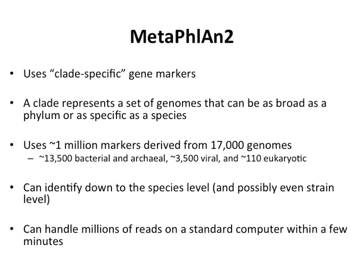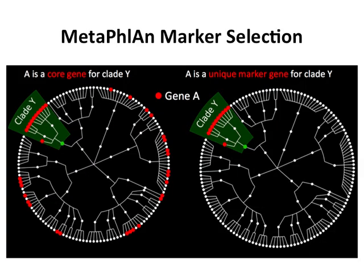MetaPhlAn2 uses clade-specific markers — there are a lot of them — and the nice thing is that you can identify down to the species level and even sometimes to the strain level. This is often mentioned as another advantage over 16S: with 16S you'll get down to maybe genus reliably, sometimes species but not really reliably. With metagenomics in theory you can get down to strain level. You could have 100% similar 16S sequences that represent different strains with no more resolution, but with metagenomics you can get down there. The whole idea with this marker-based approach is you're looking for genes that are unique to a particular clade and not found anywhere else on the phylogenetic tree.